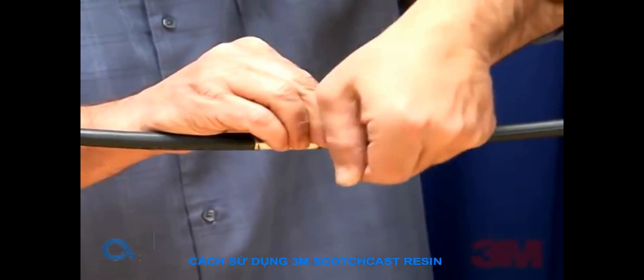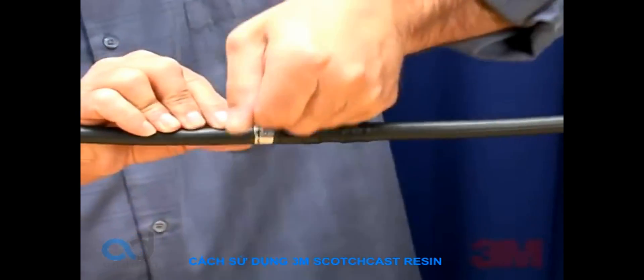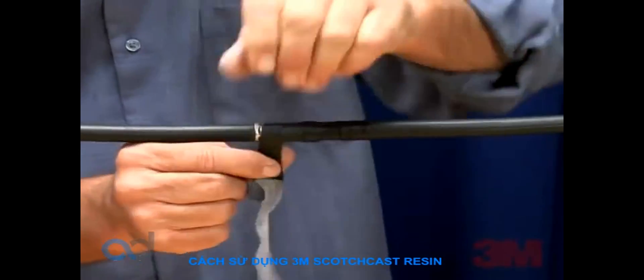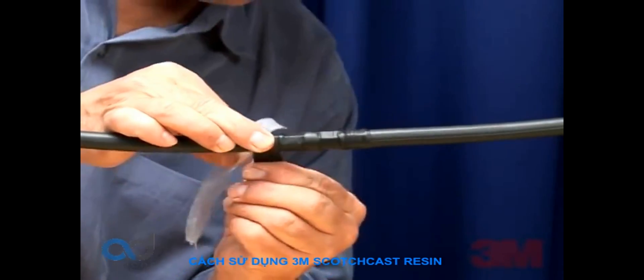Apply one layer of half lap Scotch brand electrical tape 23 over the connector area only. Do not wrap tape onto the pencil area. Note that connectors are not included with the kit and should be ordered separately. Each kit makes one splice.